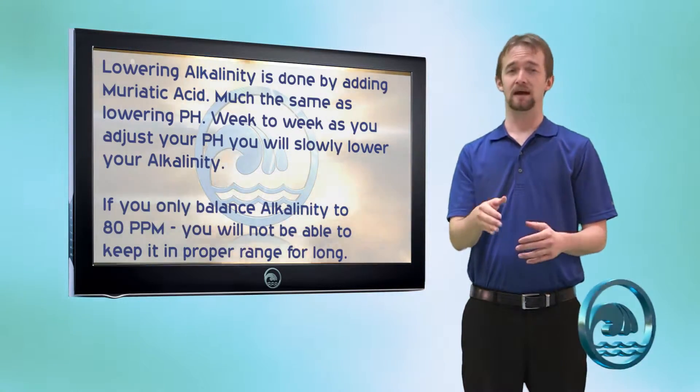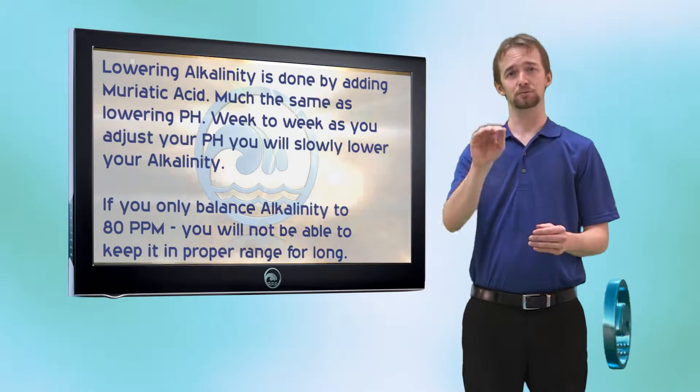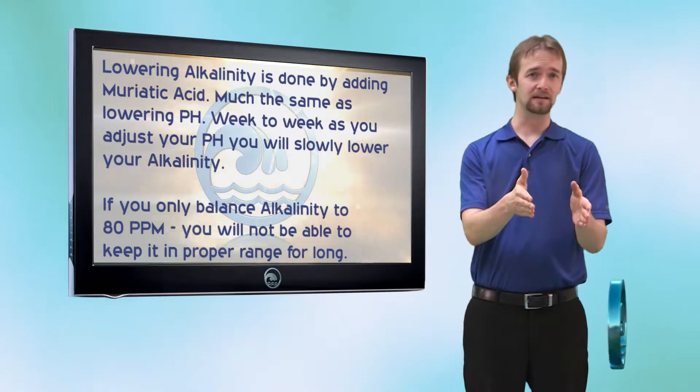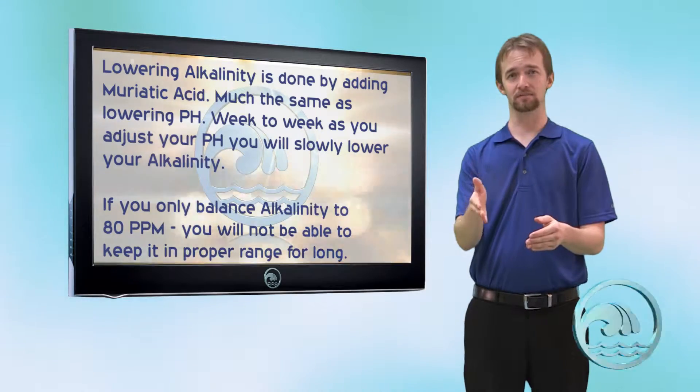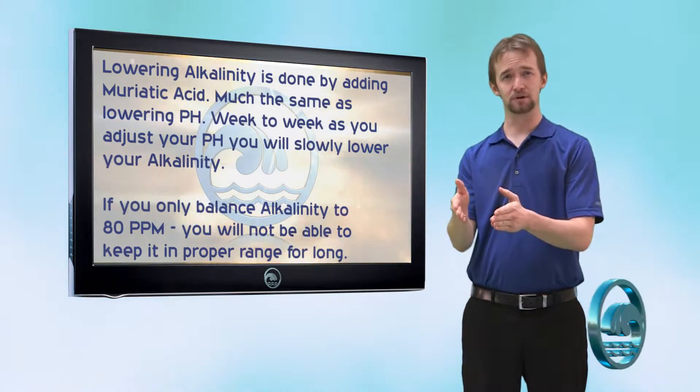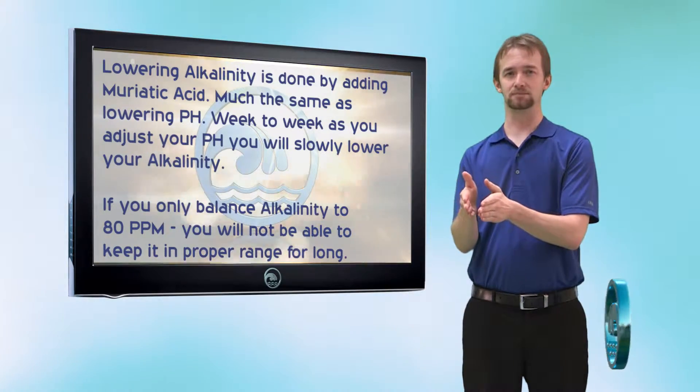So as you go through week to week lowering your pH, you will slowly lower your alkalinity level. So if you only balance your alkalinity to 80, you're going to constantly have a level that's too low. But if you balance out to 110, 120, then that's going to give you a longer time window of having your alkalinity balanced properly.